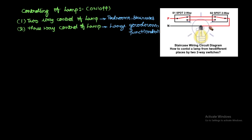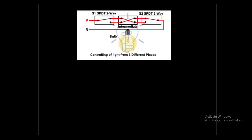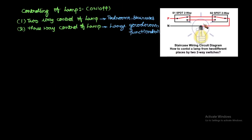In two-way control of the lamp, consider the switch positions named 1, 2, and 1-dash, 2-dash. The phase is connected such that when you connect 1 and 1-dash, you create a closed path.